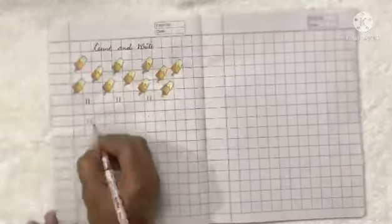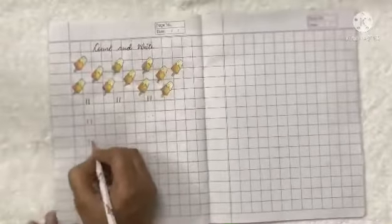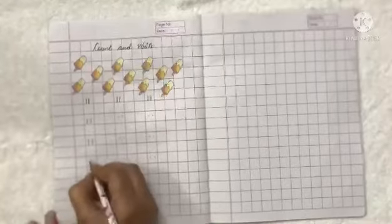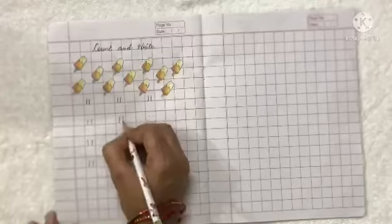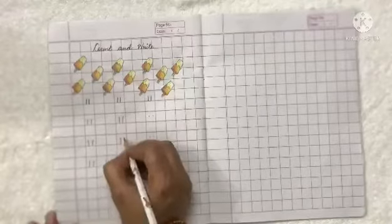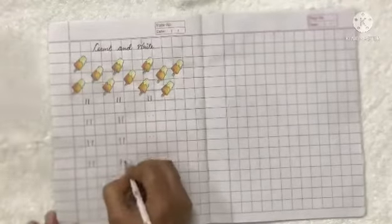So, start writing number 11 touching the bottom line. You have to write it very neatly in your maths notebook. This is number 11. Number 11. Ok children?